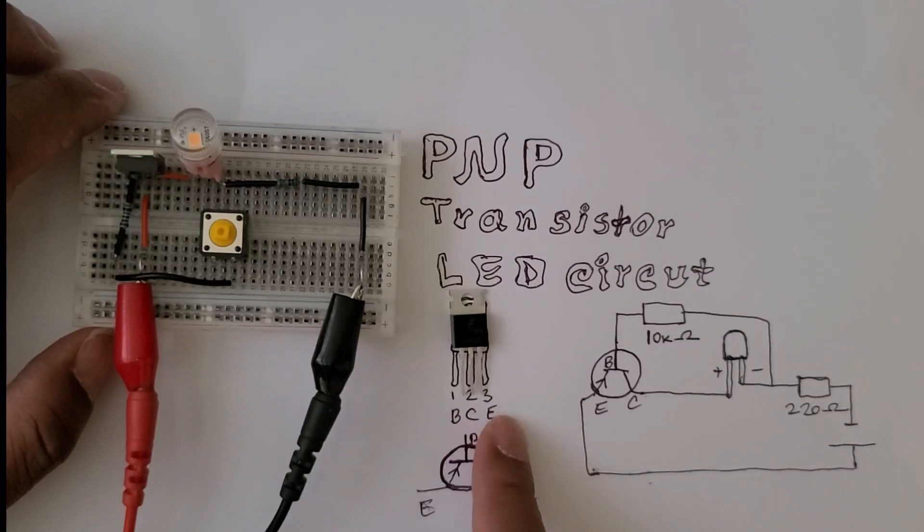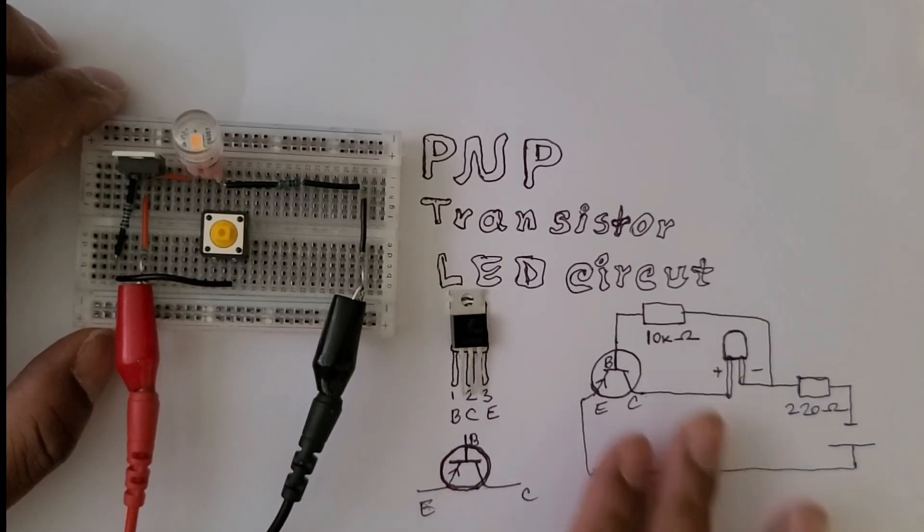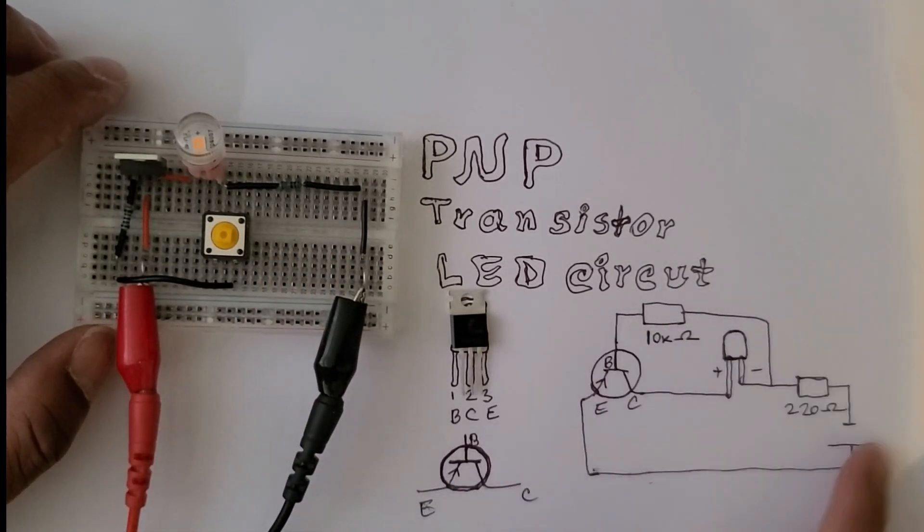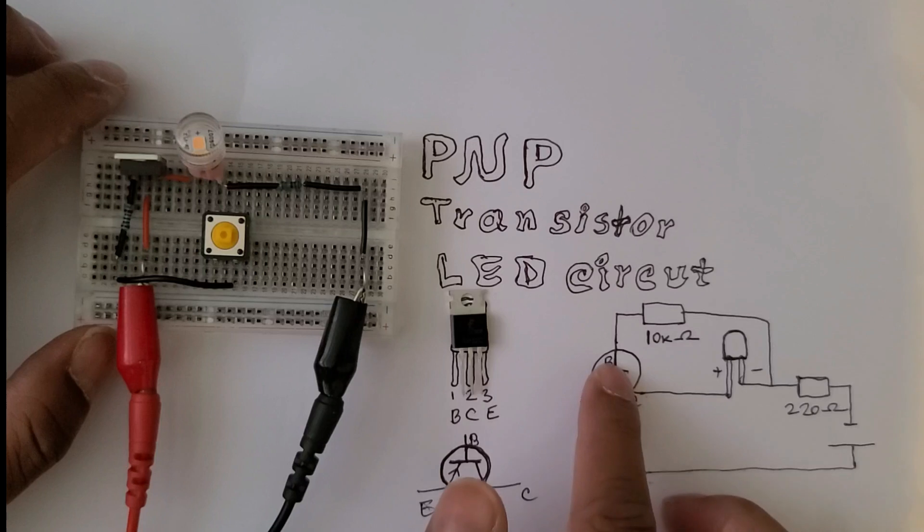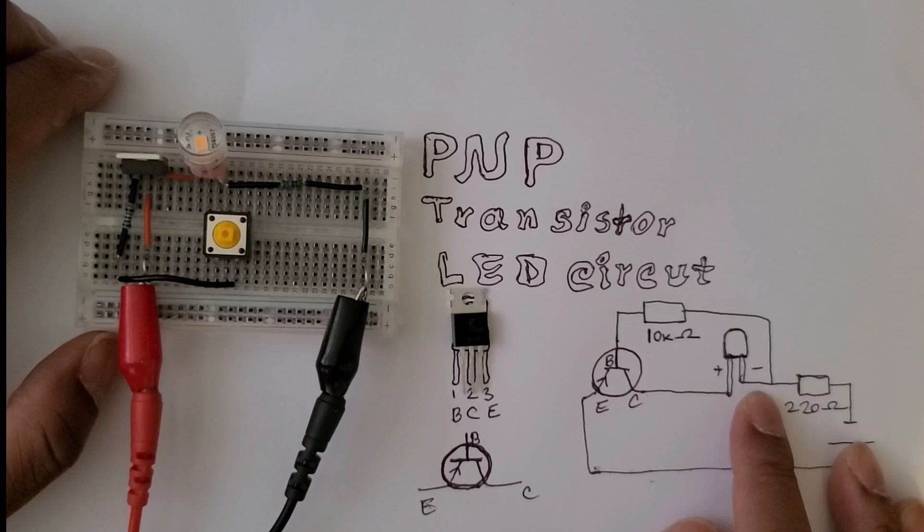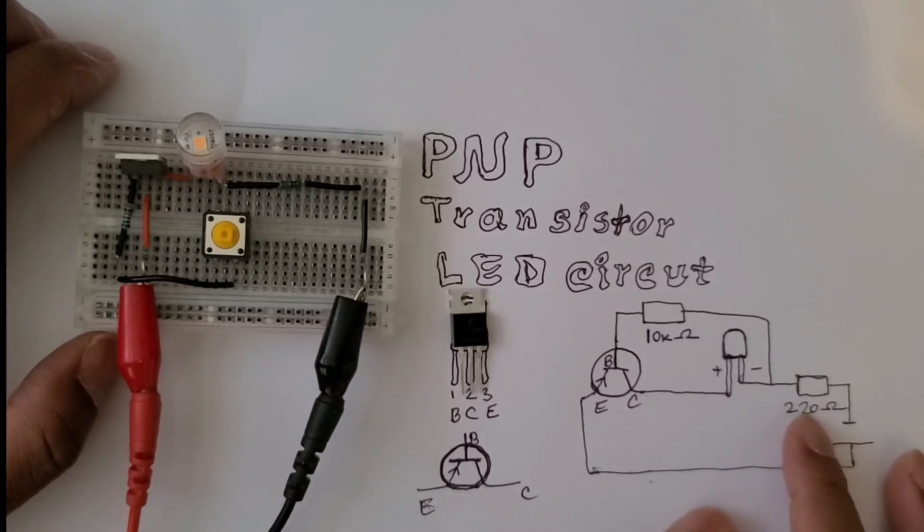This circuit can be visualized in this diagram. The base is connected through a 10k ohm resistor with the negative pin of the LED, which is then connected